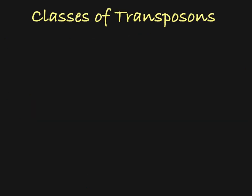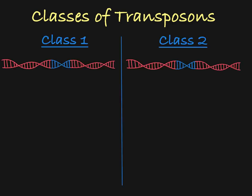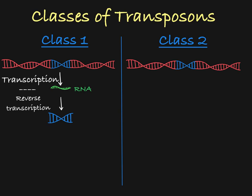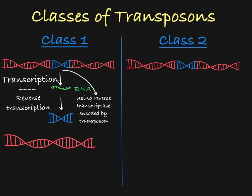There are two distinct classes of transposable elements. Class I transposons move by first being copied into an RNA intermediate through transcription, and then that RNA is copied back into DNA through reverse transcription using the enzyme reverse transcriptase. This reverse transcriptase is typically encoded by the transposon. This DNA is then inserted back into the genome.